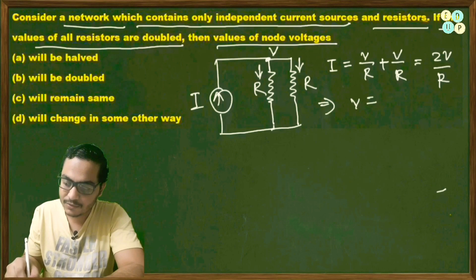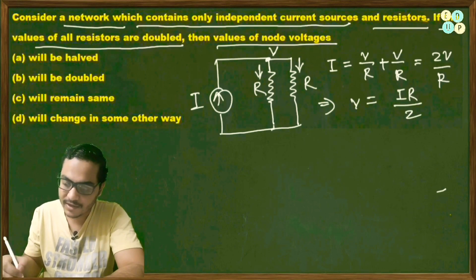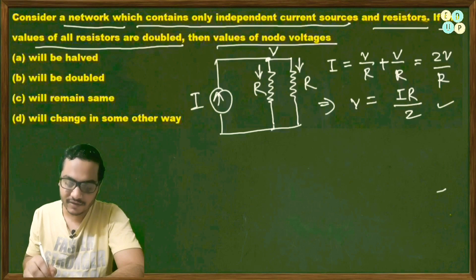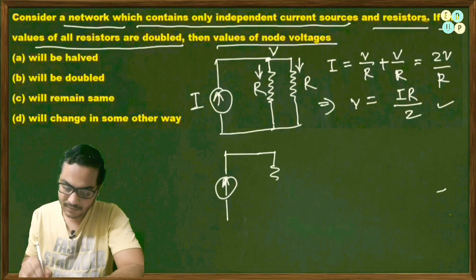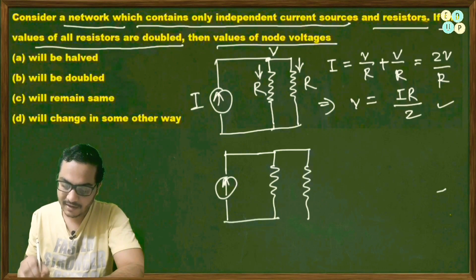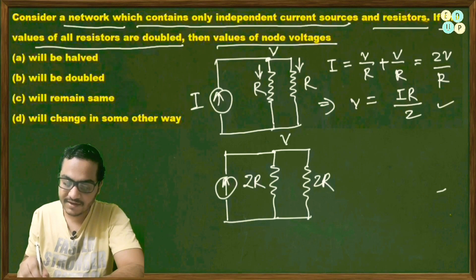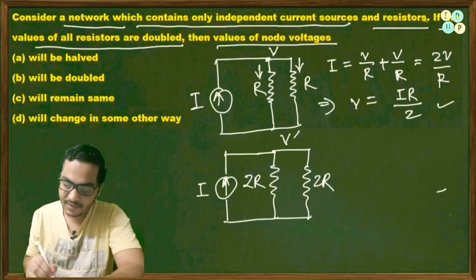So v = i·R/2. Now let's double the resistances. Redrawing the circuit with two resistances of 2R each in parallel, and the same current source i. Let the new node voltage be v'.